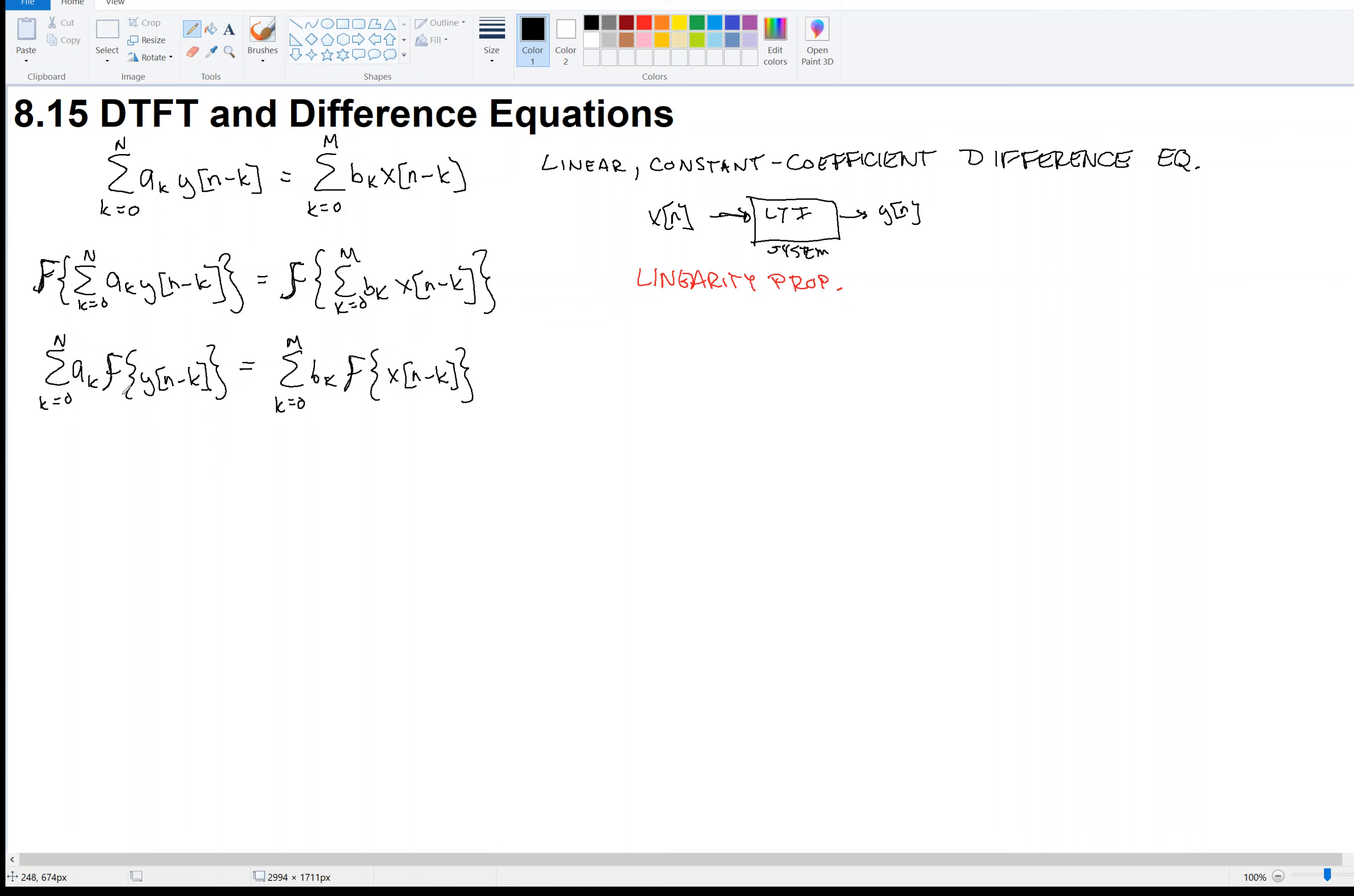Now, I have the Fourier transform of delayed versions of y and delayed versions of x. So let's assume that y of n has, or I guess define, let's say that y of n has Fourier transform capital Y and similarly, x of n has Fourier transform capital X. Now we want the Fourier transform of shifted versions of x and y respectively. So I'm going to apply the time shift property now. So hopefully you see how things are coming together.